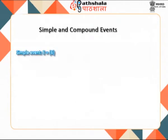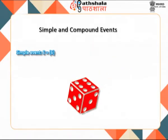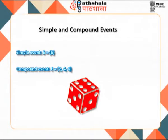An event of an experiment is simple if it cannot be decomposed any further. For example, getting 6 on a roll of a die is denoted as event E = {6}. On the other hand, if an event can be decomposed into simple events or is formed by the combination of simple events, then it is called a compound event. For example, getting an even number in the roll of a die is denoted by event B = {2, 4, 6}. Here, event B consists of 3 simple events.